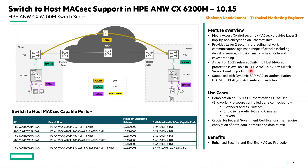The switch-to-host MACsec protection is available on the downlink ports of CX6200M series of switches as part of the 10.15 release. It is supported with dynamic EAP MACsec authentication — that is EAP-TLS and EAP-PEAP — on the authenticator switches.